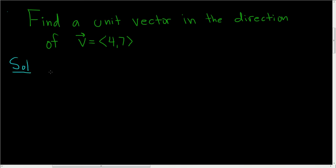So there's a formula. The unit vector in the direction of v is 1 over the magnitude of v, times our vector v.